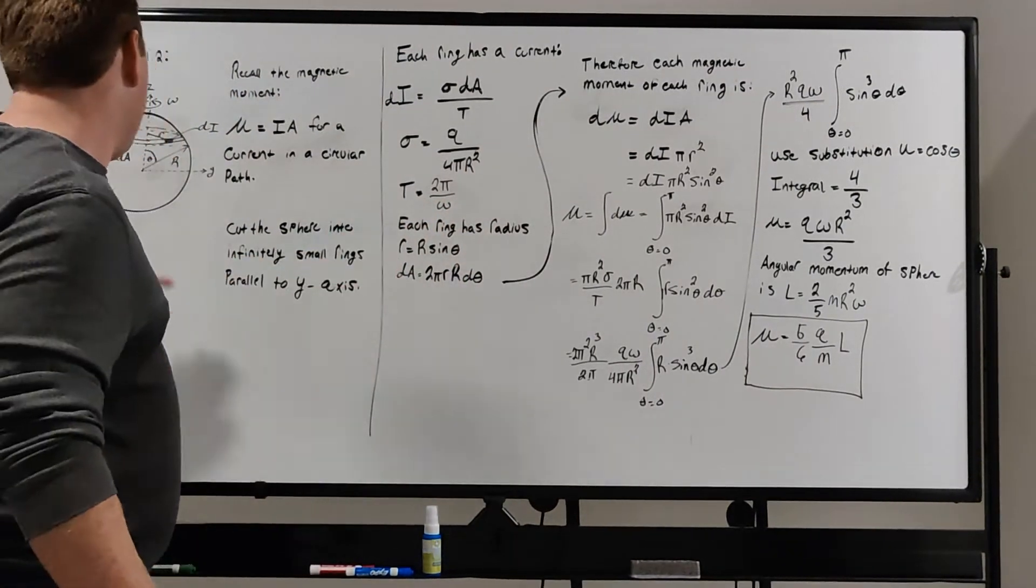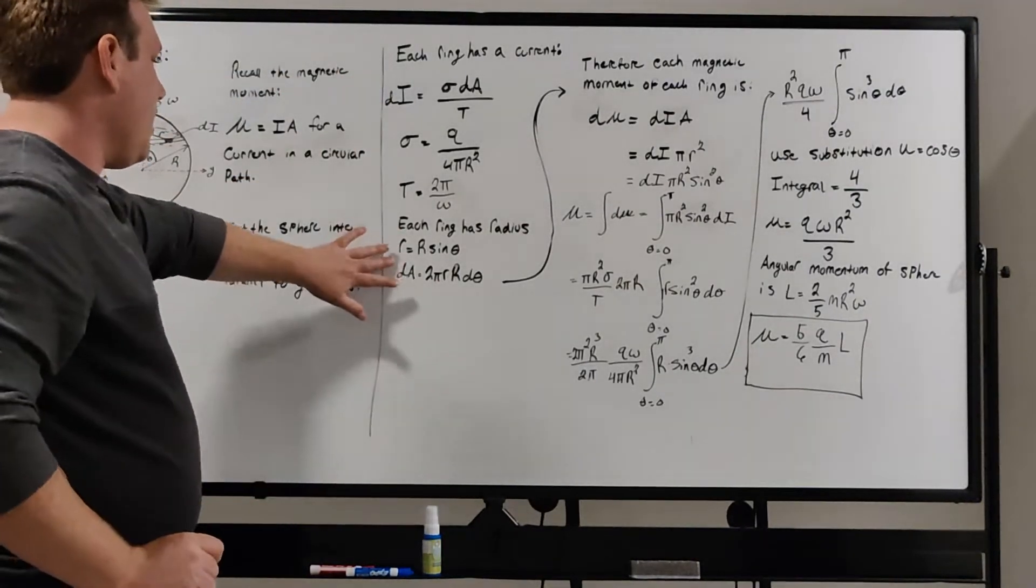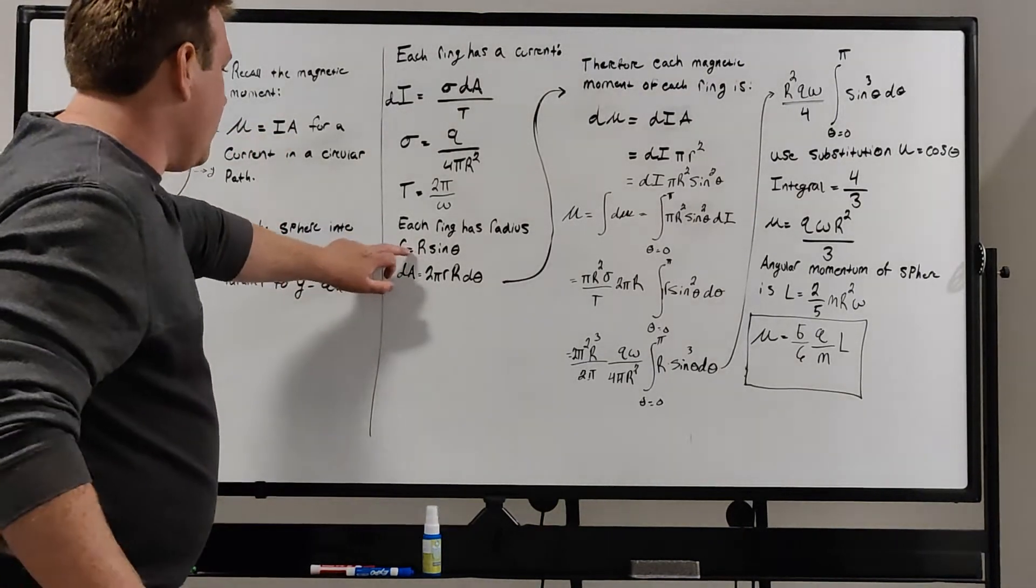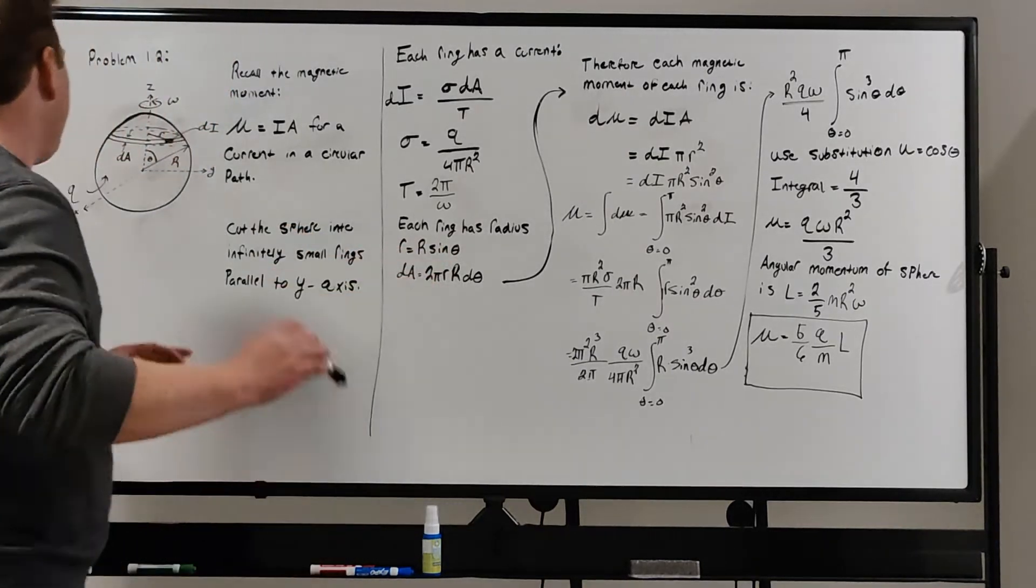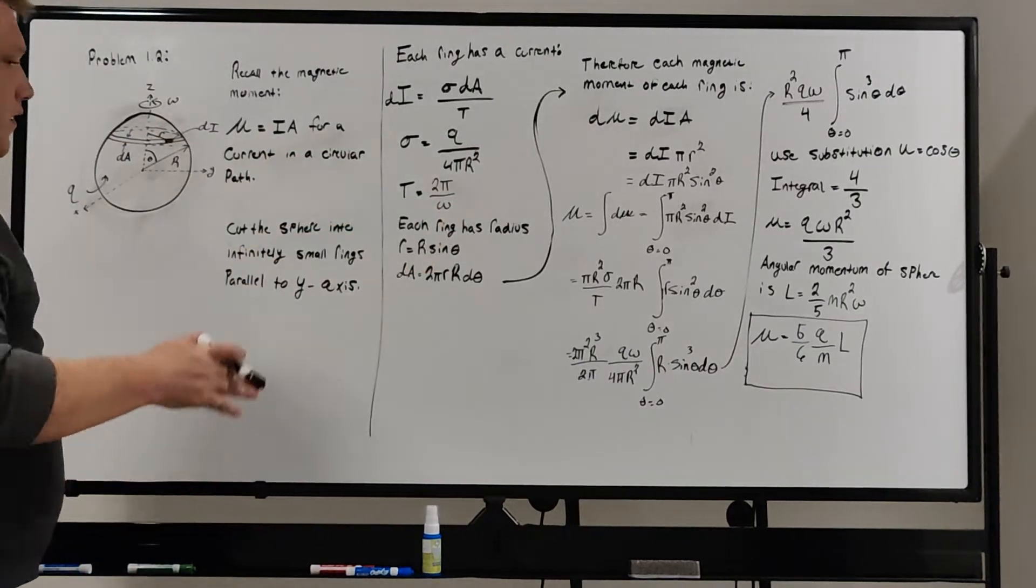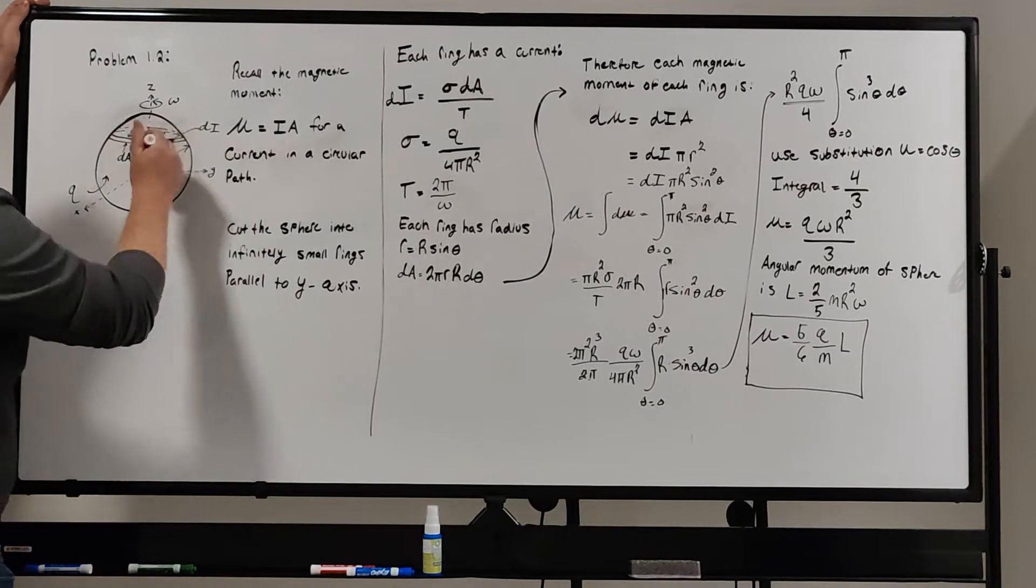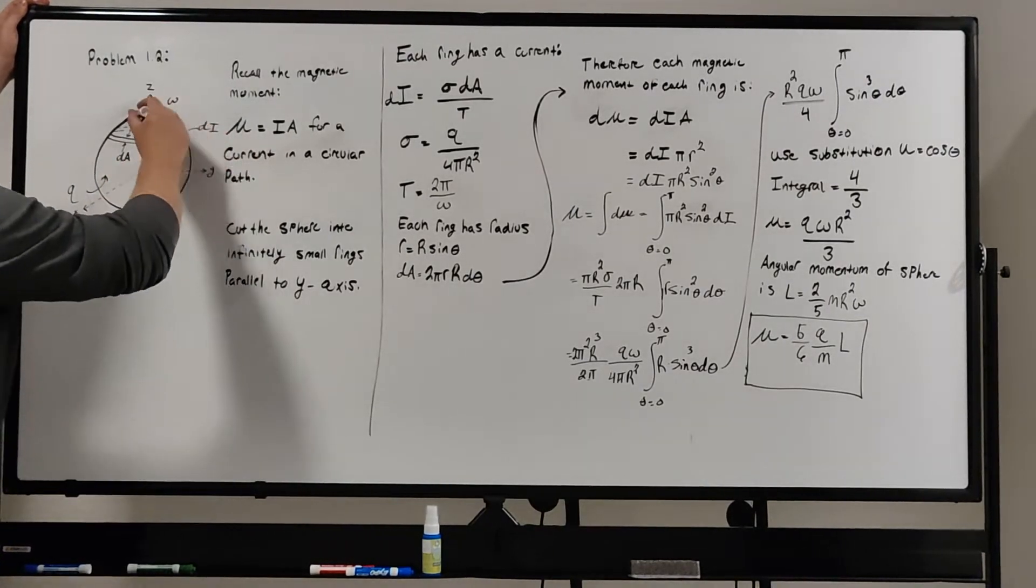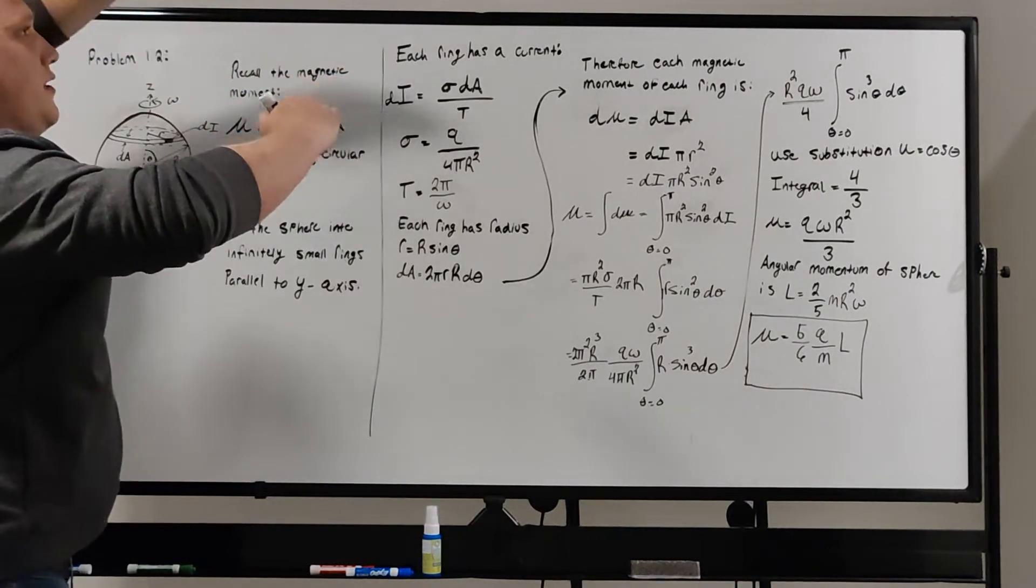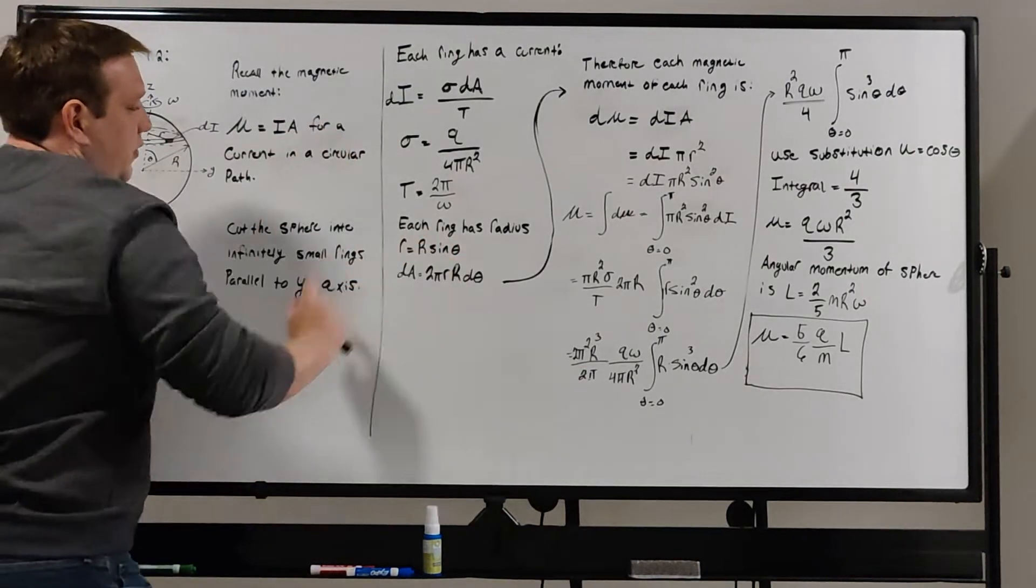Little r here is the radius of each ring, and that little radius changes as you go up and down the sphere. You can express little r in terms of the actual radius. So r equals capital R sine of theta, because little r is just that horizontal component of the larger radius. That horizontal component decreases as you go up the sphere and increases as you go down the sphere. This is the relation between those two.